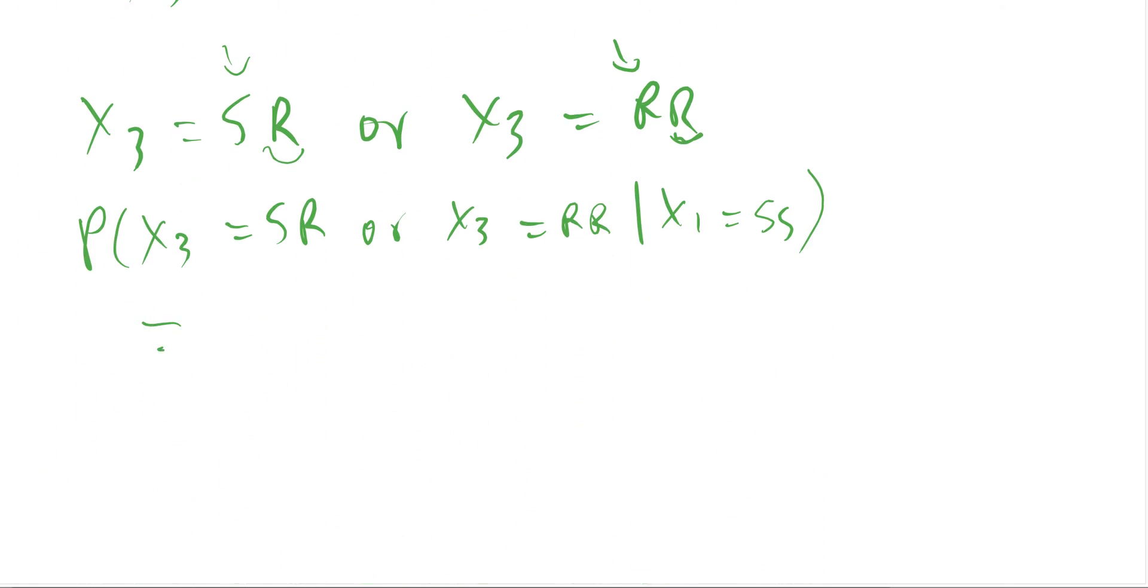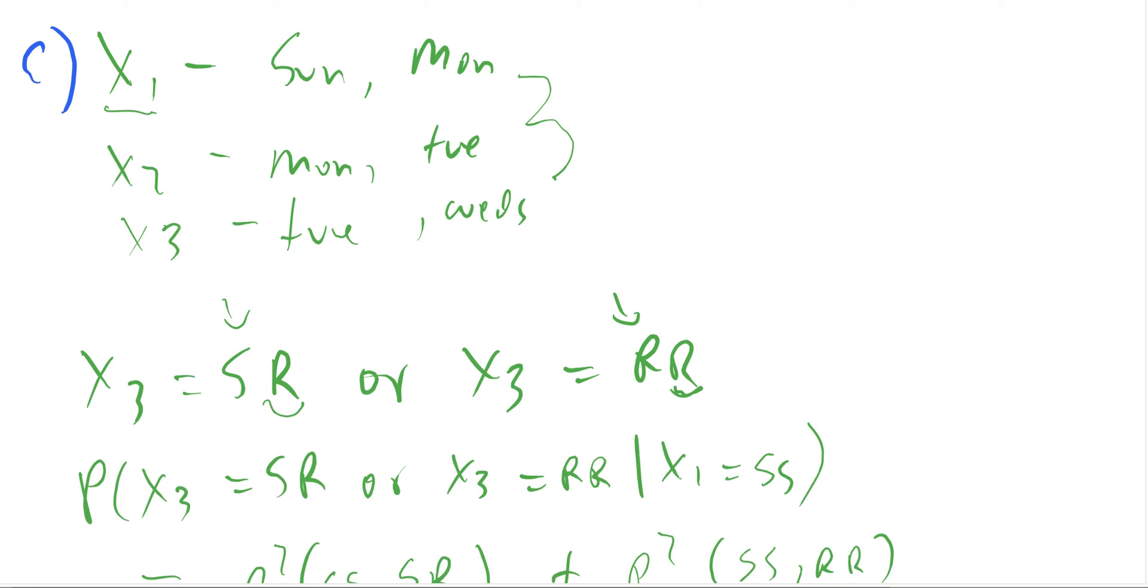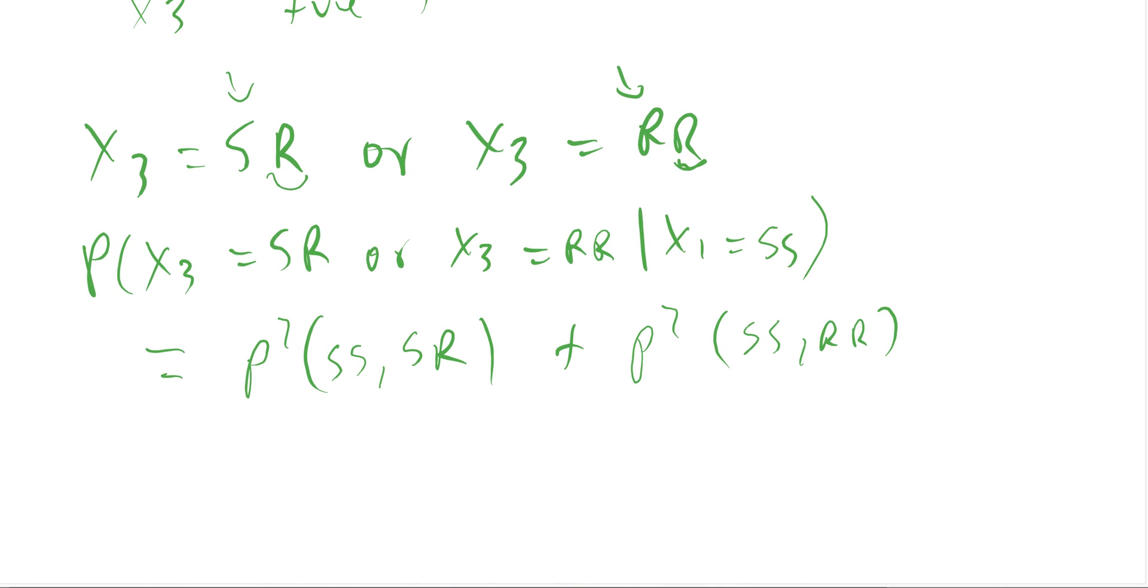So moving on, this is going to equal P squared from SS to SR plus P squared from SS to RR, which we said was 0.18 plus 0.21, which equals 0.39, and that's how we get that. Okay. Let's see if we agree.